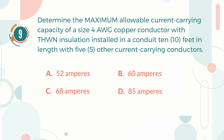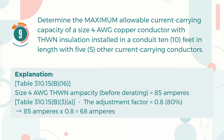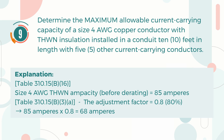The correct answer is C. 68 A. Explanation: Table 310.15(B)(16) indicates that the ampacity of size 4 AWG THWN before derating equals 85 A. Then, looking up the adjustment factor in Table 310.15(B)(3)(a), the adjustment factor is 80% or 0.8. Multiplying 85 A by 0.8 gives the answer of 68 A.